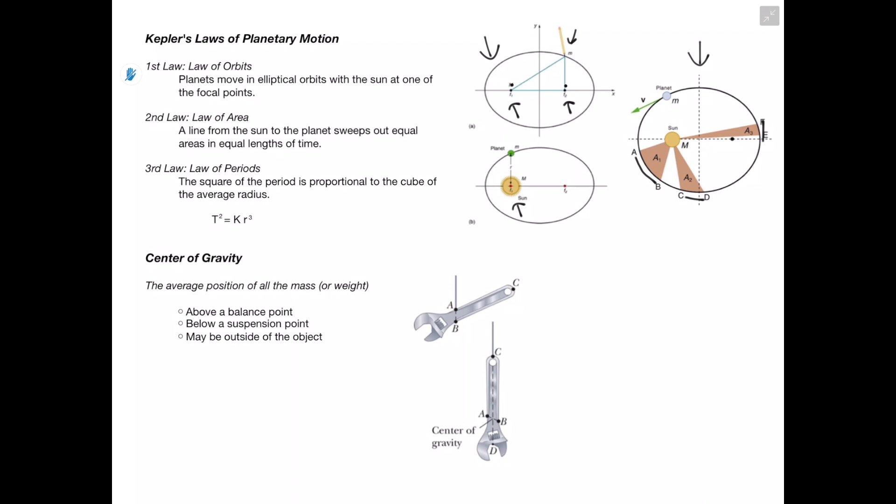The third law, the law of period, states that the square of the period is proportional to the cube of the average radius, and we can see that relationship in this equation. Center of gravity is the average position of all the mass or weight within an object. It's going to be above a balance point, below a suspension point, and sometimes it may be outside of the object.